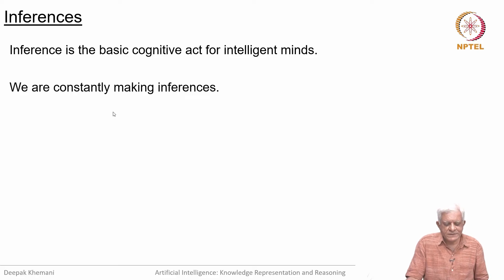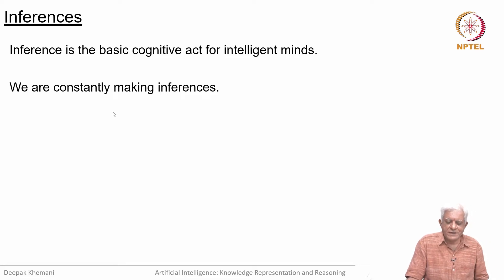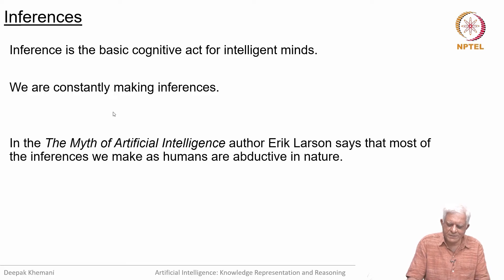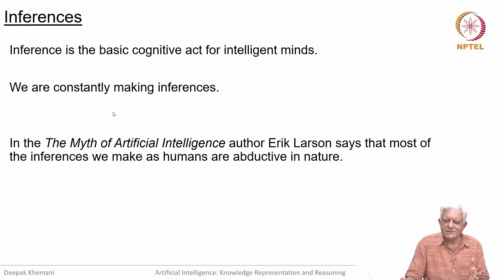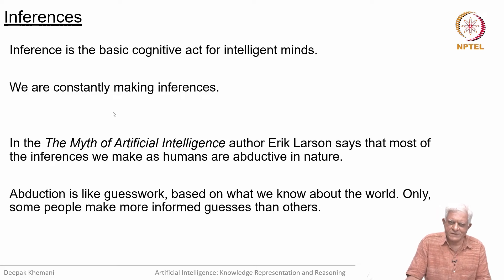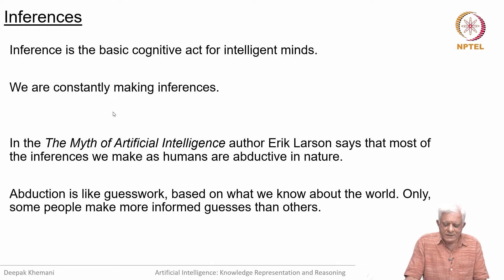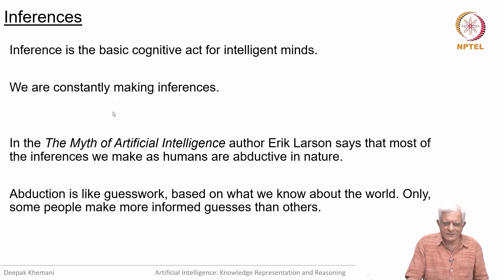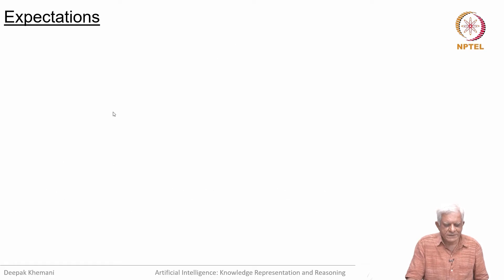We are all the time making inferences. Some may be true and some may not, but we always have flights of imagination, making sense of what we see by inferring other things. In the recently published book 'The Myth of Artificial Intelligence,' author Eric Larsen says that most inferences we make as humans are abductive in nature. We are confronted with a situation, we have background knowledge, and then we make inferences. Abduction is like guesswork — guessing the reason for whatever you are seeing. Some people make more informed guesses than others; perhaps people like Sherlock Holmes make better guesses.